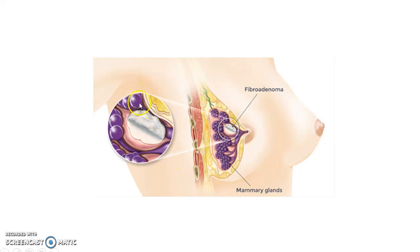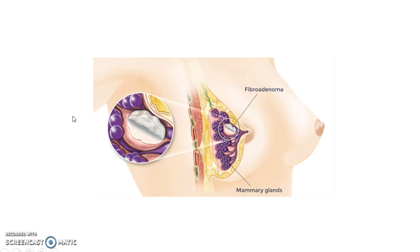This is a normal lobule whereas this is fibroadenoma. As you can clearly see, fibroadenoma is basically a hyperplasia of a single lobule. I have made a separate video on fibroadenoma — if you need more information please check out that video; I'll leave the link in the description.